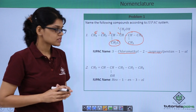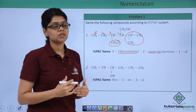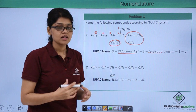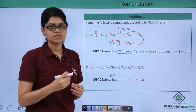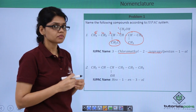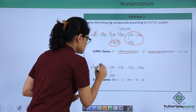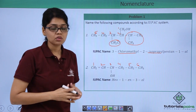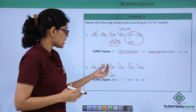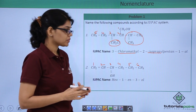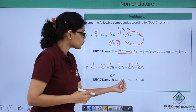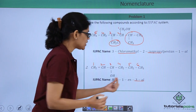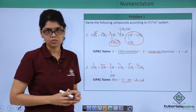For the second structure, the numbering is done so that the functional group receives the lowest number, giving carbons 1 through 6. The parent hydrocarbon is hexane with OH at position 3, so this is hex-1-yn-3-ol, where 3 corresponds to the position of OH and 1 corresponds to the position of the double bond.